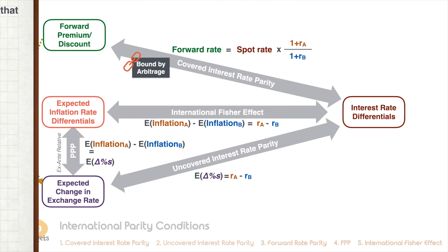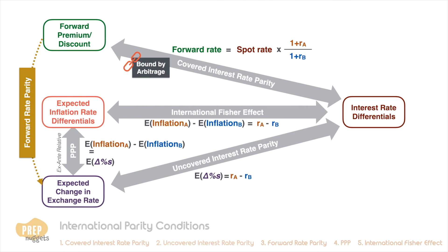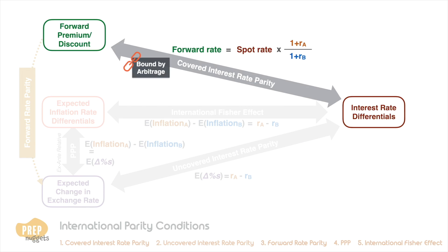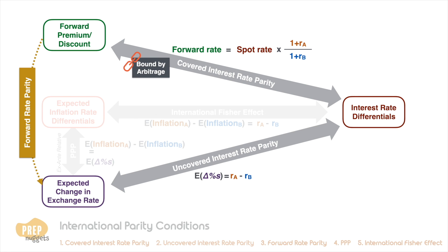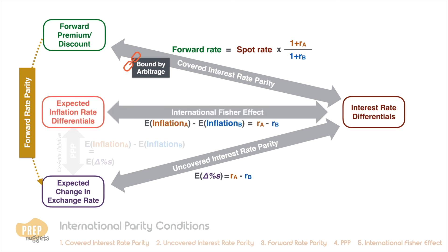In summary, these are the five international parity relationships that govern interest rates, inflation rates, and currency exchange spot rates and forward rates between two countries. We've learned that covered interest rate parity holds by arbitrage. If forward rate parity holds, uncovered interest rate parity should also hold.